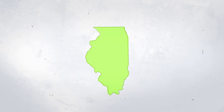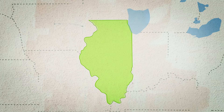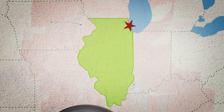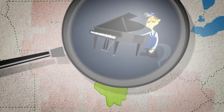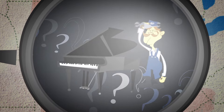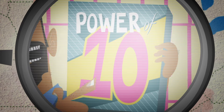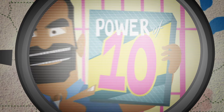One example of the classic Fermi estimation problems is to determine how many piano tuners there are in the city of Chicago, Illinois. At first, there seem to be so many unknowns that the problem appears to be unsolvable. That is the perfect application for our power of 10 estimation, as we don't need an exact answer — an estimation will work.